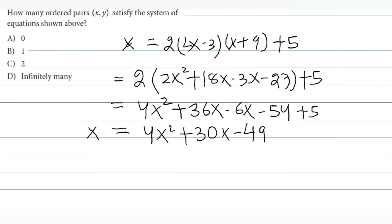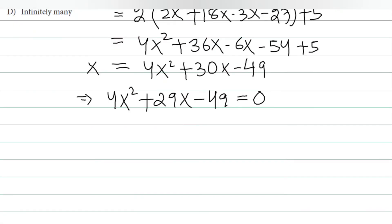So we get 4x² plus 29x minus 49 equals 0. This is a quadratic equation.